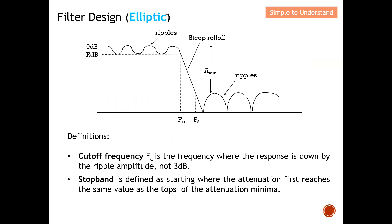Last but not least, let's discuss filter design using Elliptic. Elliptic is basically totally different from Chebyshev — you are going to tolerate ripple at both the pass band and the stop band. For Chebyshev, you can only have ripple in either the pass band or the stop band, but with Elliptic you tolerate ripple on both. The key difference is that the cutoff frequency Fc is the frequency where the response is down by the ripple amplitude, not 3 dB. The stop band is defined as starting where the attenuation first reaches the same value as the top of the attenuation minimum.